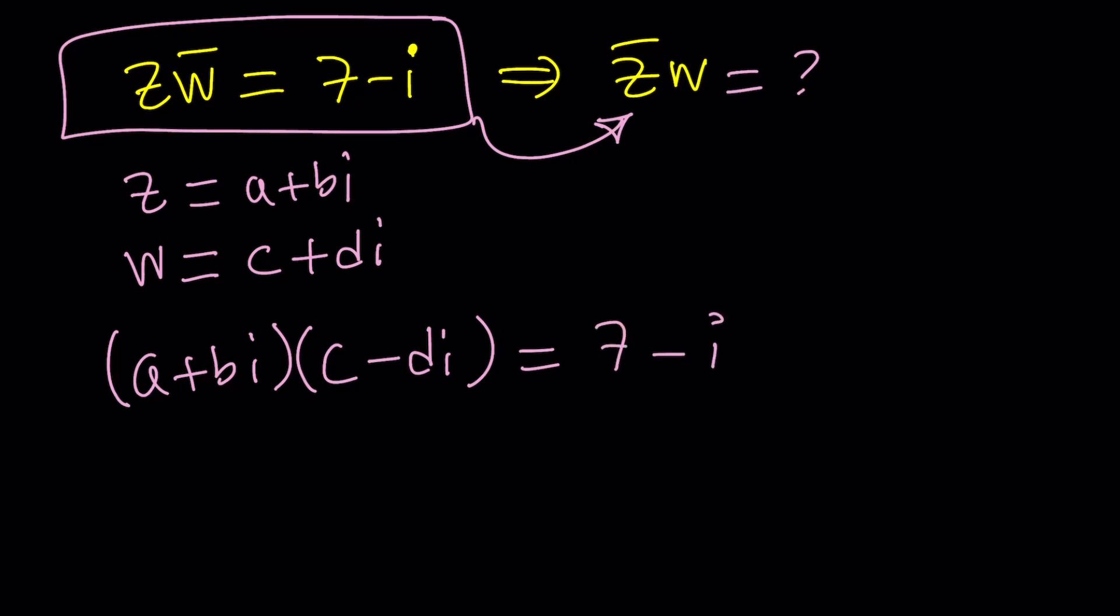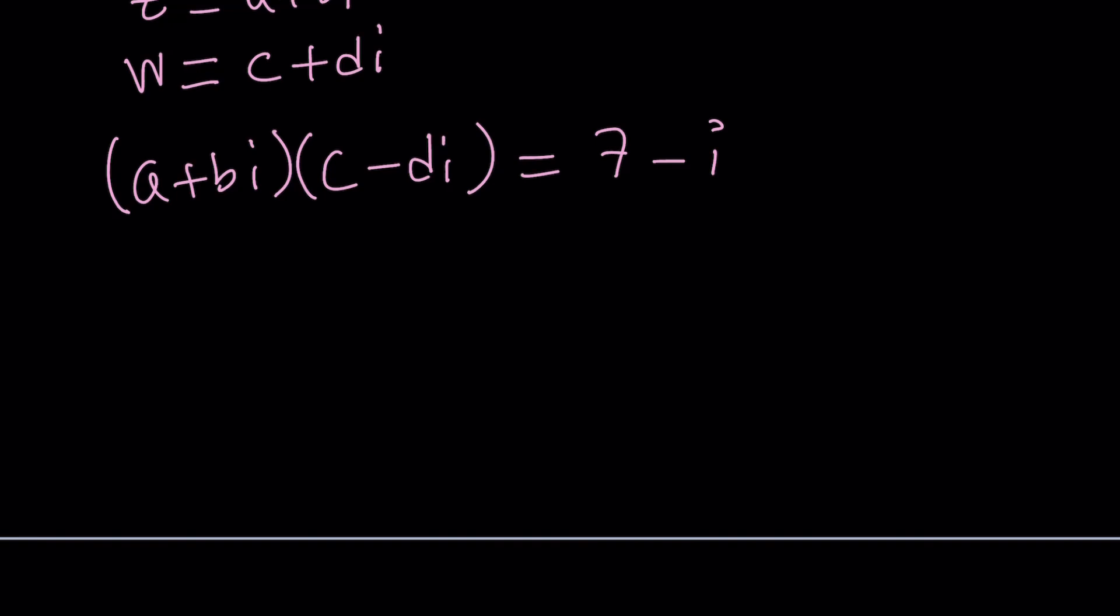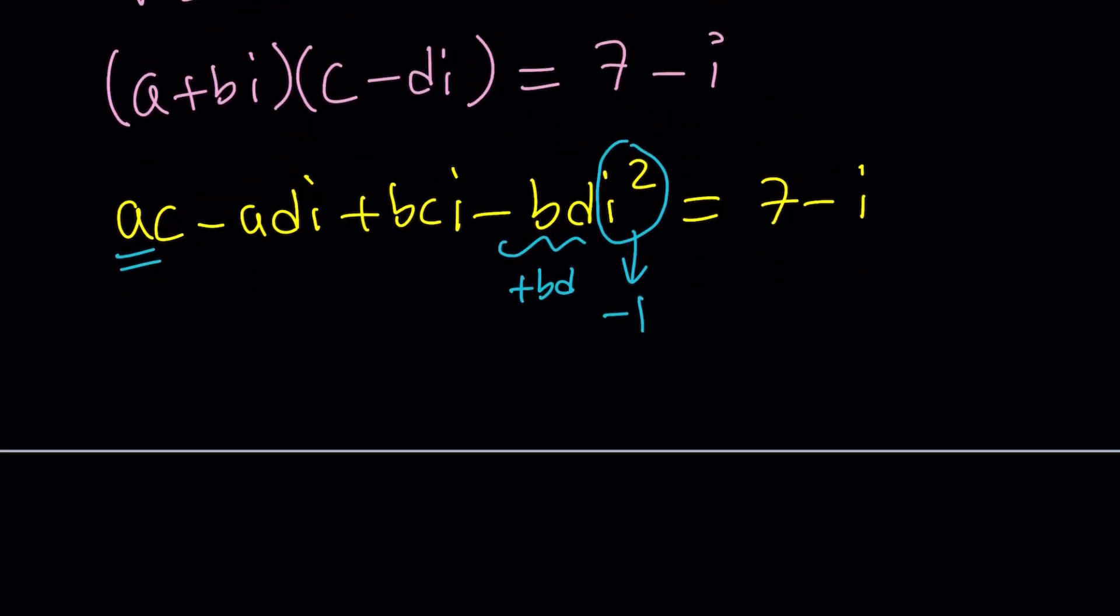When you multiply two complex numbers, you separate the real and imaginary parts after distributing. So it's going to be ac minus adi plus bci, and finally bdi squared with a minus sign. One thing to remember: i squared is always equal to negative 1. If you do that, you're going to get positive bd from here.